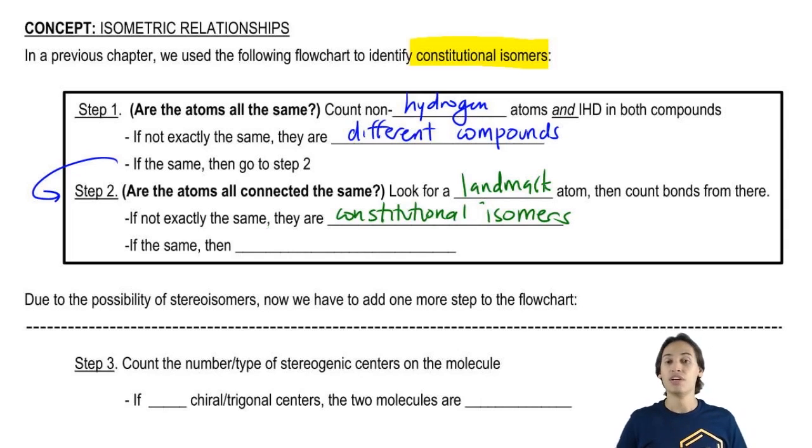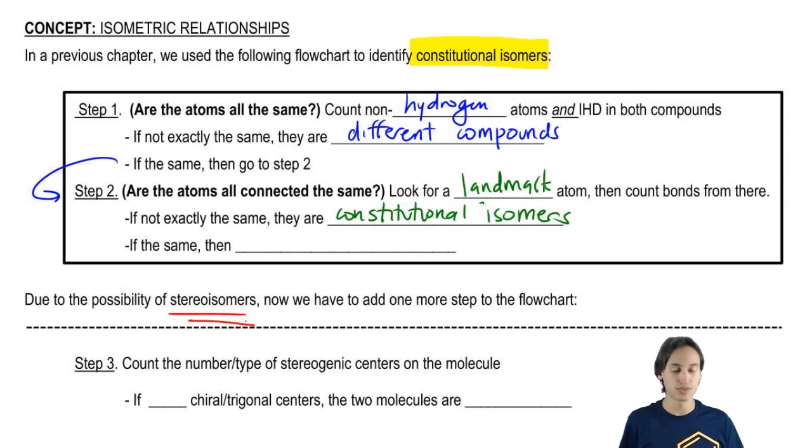But it turns out that now that we have the possibility of stereoisomers, we actually have to go to step three. Instead of just assuming that they're identical, now we have to look at the stereoisomers and we have to say stereocenters. We have to say is this an R, is this an S, stuff like that.